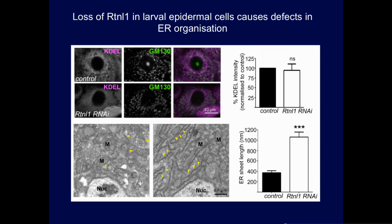We first looked at larval epidermal cells where we could visualize an ER network. Looking at confocal images of these cells using a KDEL classical ER marker, in wild-type cells you see some hint of an ER network. In reticulon knockdown — and we see the same effect in reticulon mutants — there's some loss of network organization. At the EM level, the most prominent phenotype is that ER sheets have become expanded, consistent with loss of curvature, either at the ends of ER sheets or perhaps with conversion of tubules to sheets.